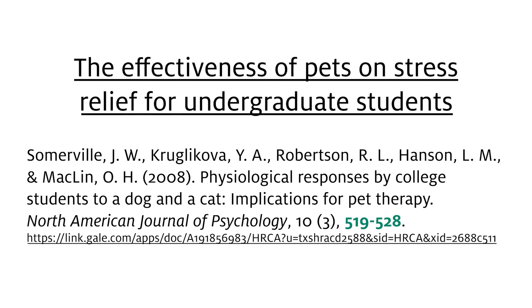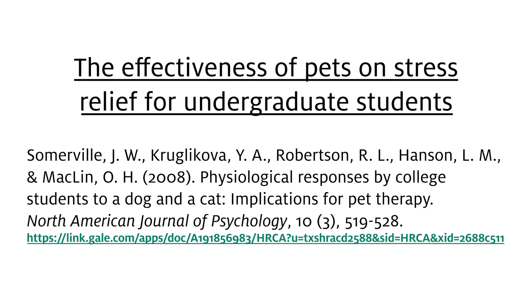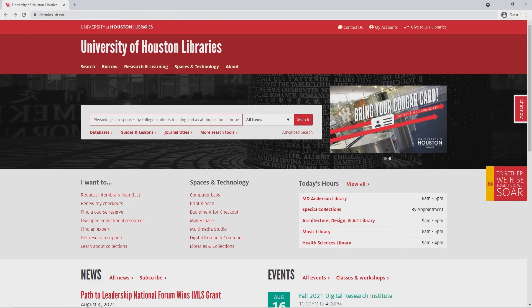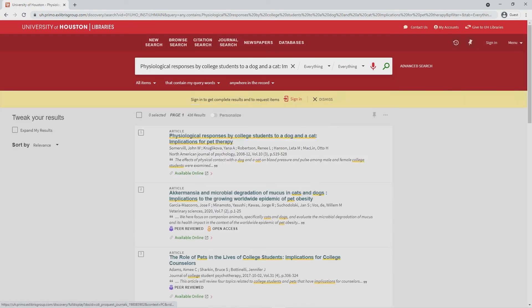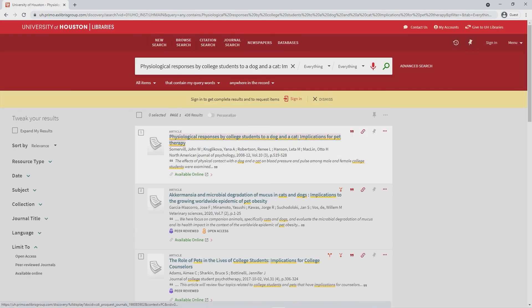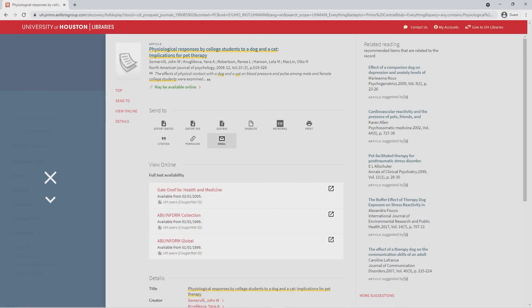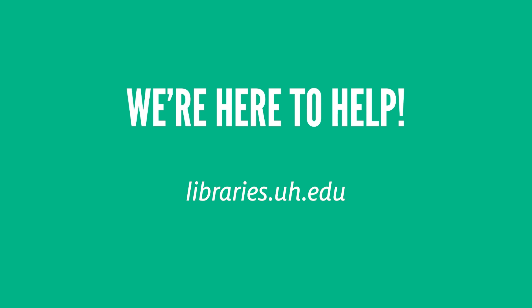Finally, sometimes you'll also find a link provided at the end of a citation when the source is a website or available online. This is usually the easiest way to find a source from a citation when it's available, but because links can change, it's not always a guarantee. This is why it's helpful to have a full citation. You can then search for the title in a library database or Google Scholar and use the rest of the information to confirm you found the right article. If you're still having trouble with reading a citation and finding a source, contact UH Libraries for further help.